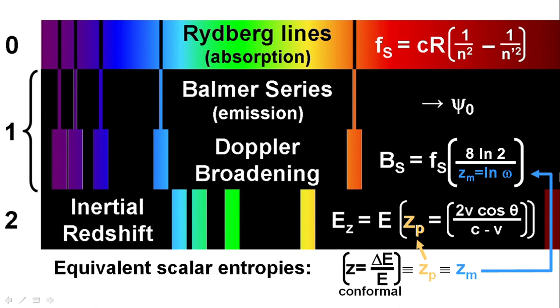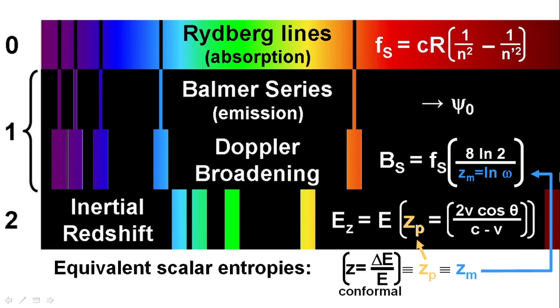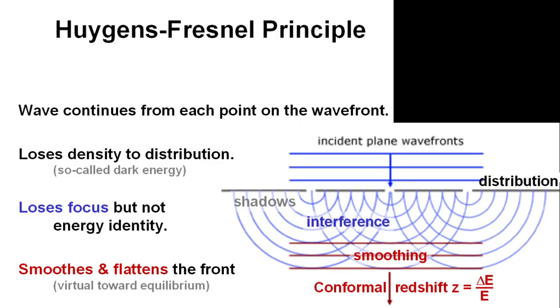There is no clever workaround because uncertainty principle applies. We cannot know, and any thoughts otherwise are unfortunately unprovable speculation. The conformal effect of distribution commonly termed dark energy is explained by Huygens principle. In 1671, Huygens postulated that as a wave propagates through a medium, each point on the advancing wavefront acts as a new point source of the wave. Distribution of radiation loses energy, whereas ordinary light loses density. By losing density, it doesn't lose the original energy identity, but it does lose focus and flatten the front, creating a virtual redshift.